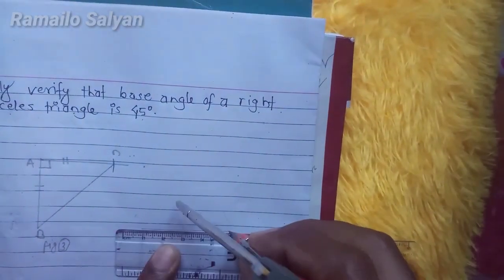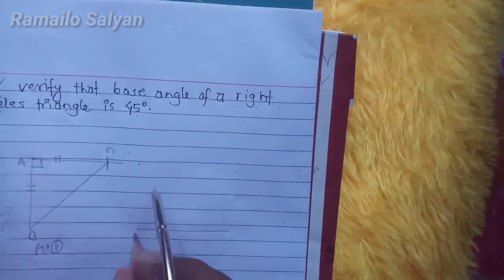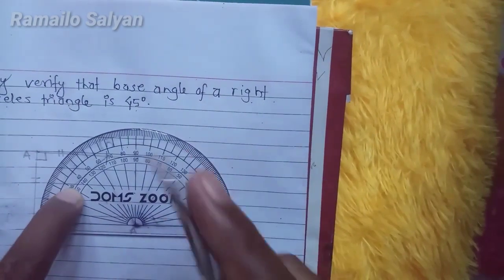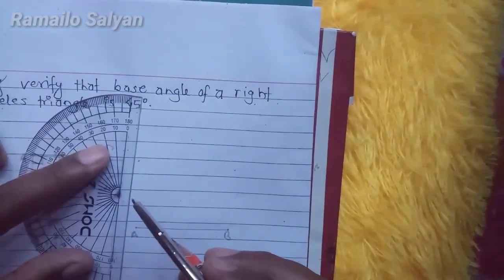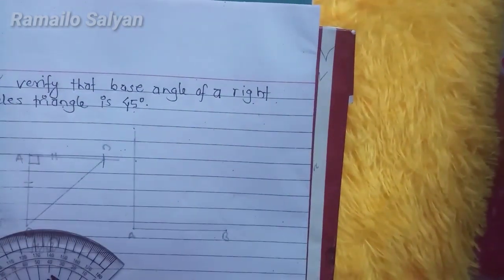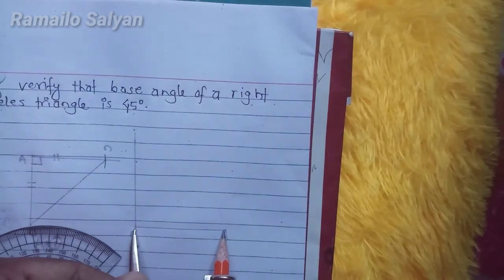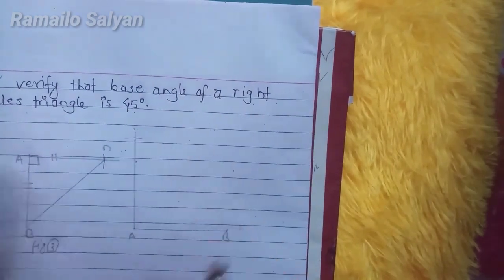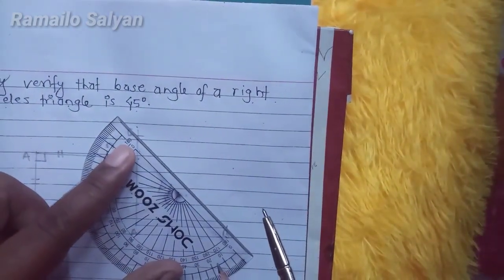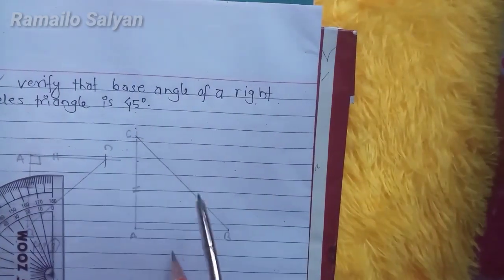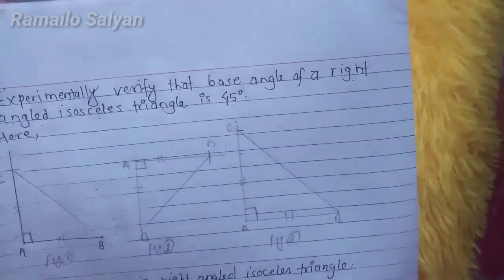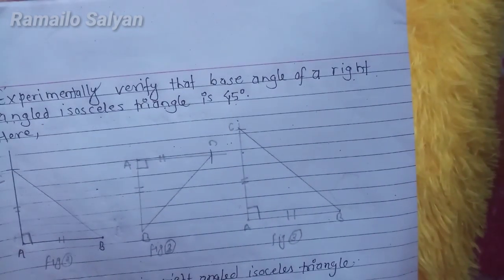Draw a third figure: a line segment of any length, then construct 90 degrees at A. This is also a right angle isosceles triangle. To verify, measure the length with the compass same as the length of AB and cut down from point A to this line. Name the intersecting point C and join C with B. Length AB equals length AC and angle A is exactly 90 degrees, so this is also a right angle isosceles triangle.